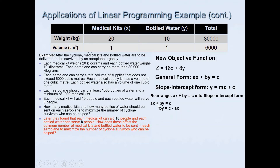When we rearrange ax plus by equals c into slope-intercept form, we move ax to the other side — changing side changes sign — then divide everything by b. So y equals c minus ax, all divided by b. From this we can see that the gradient value is the coefficient of x, which is negative a over b. That's the general form for the gradient.